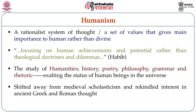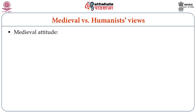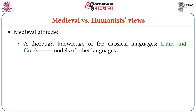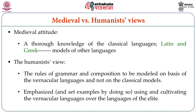Humanism moved away from medieval scholasticism and rekindled interest in the ancient Greek and Roman classics and their way of thinking. What was the medieval attitude? The medieval attitude was that it was essential to acquire a knowledge of the classical languages, that is Latin and Greek, and they believed these should serve as the models of other languages. The humanists, however, believed that grammar and composition should be modeled on the basis of the vernacular languages, and they believed in cultivating the vernacular languages over the languages of the elite.